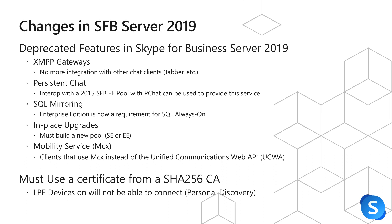You must build a brand new standard or enterprise edition pool. Back with Lync 2013 to 2015 migrations, there was the ability to upgrade directly, but this no longer exists in Skype for Business Server 2019 — ensuring DNS records are correct and that servers being rebuilt don't have legacy components, giving you a better environment overall. Additionally, the mobility service or MCX has been removed, so you can no longer connect using a client that uses MCX instead of the UCWA API. Additionally, you must use a certificate from a SHA-256 CA. Web browsers will show a certificate error if you try using a certificate from a SHA-1 CA.